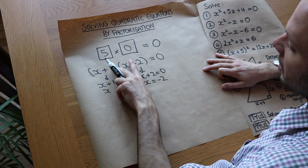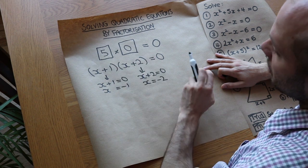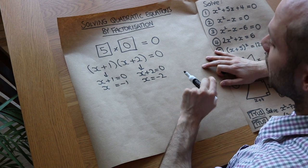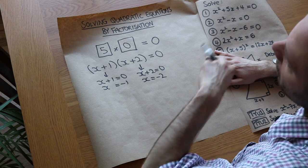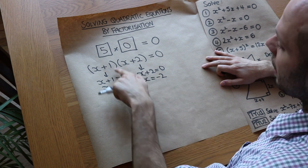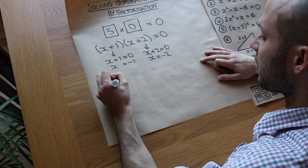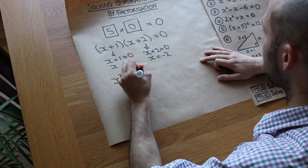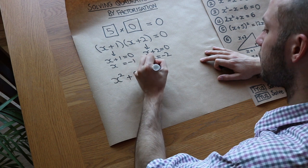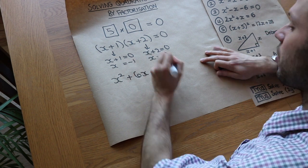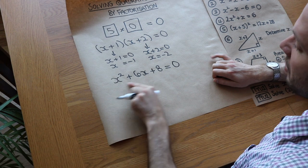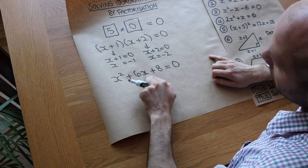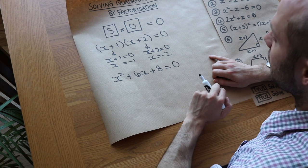You might have seen brackets like this before — that's whenever we factorize a quadratic expression. So the strategy is: make sure there's zero on one side, factorize our quadratic, and then use this reasoning. So let's say we had x squared plus six x plus eight equals zero. We've already got zero on one side. This is a quadratic because we have an x squared term, possibly an x term, and a constant term. That makes it quadratic.